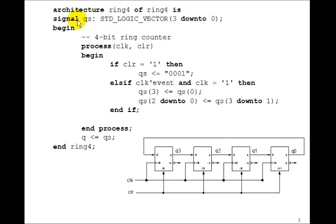To do that we need the signal QS like we had for the shift register. This is very much like the shift register. The only difference is that instead of clearing QS, when clear goes to high we're going to have QS go 0001. That will start a 1 going in here.